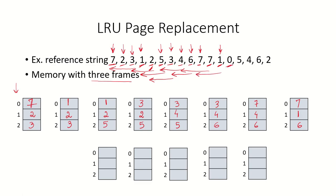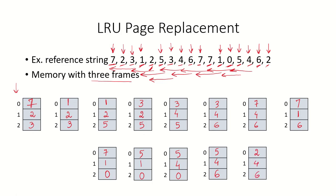Reference for page 0: looking backwards, page 7 is used recently, page 1 has been used, and page 6 is the least recently used, so page 6 will be replaced by page 0, causing a page fault. Pages 0, 1, and 7 are now in memory. A reference for page 3, then page 5: looking backwards, page 7 will be replaced, leaving pages 5, 1, and 0. A reference for page 4: page 1 will be replaced, leaving pages 4, 5, and 0. Reference for page 6: another page fault, least recently used page is 0, leaving pages 6, 4, and 5. Then page 2: a page fault occurs and page 5 is replaced as it was least recently used.